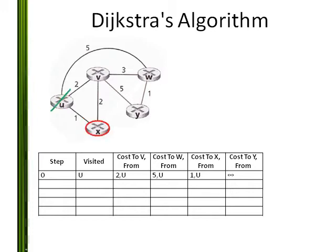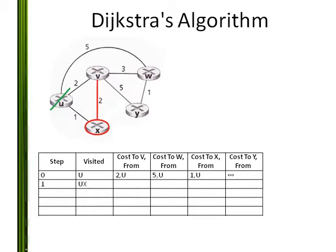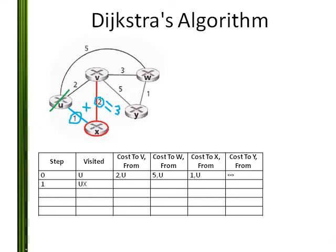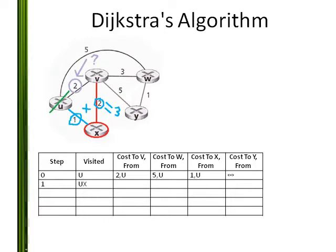I go to the cheapest node that I have not visited yet: X. I mark that I have visited X. I consider all the nodes that I have not visited yet from X. To get to neighbor V, I must add the old cheapest cost to my node X, which is 1 from U, and the cost to neighbor V, which is 2. This gives 3. Is this less than the previous cost to V, which is 2 from U? No, it is not. So I keep the previous cost.